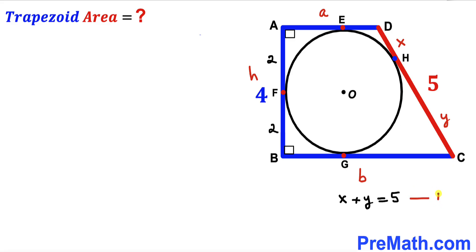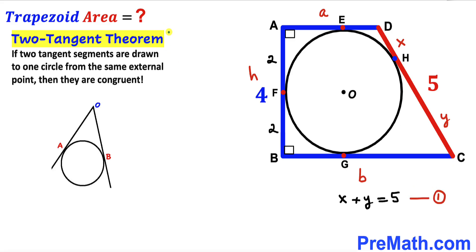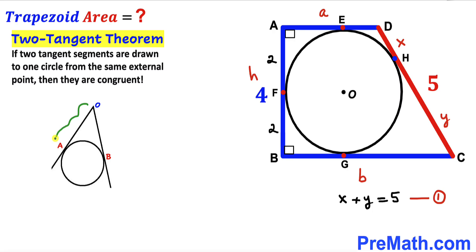Now let's recall the two tangent theorem. According to this theorem, if two tangent segments are drawn to one circle from the same external point, then they are congruent. As shown in the diagram, from a single external point, the two tangent segments to the points of tangency are equal in length.